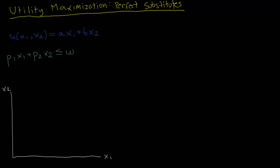In this video, I'll be going over the utility maximization problem for perfect substitutes. The utility function is defined over two goods, good one and good two, and it's linear in both goods, where A and B are just some constant parameters. We also have a budget constraint, which states that total expenditure on both goods must be less than or equal to a consumer's wealth or income level. The goal of utility maximization is to maximize the utility function by choosing a bundle of good one and good two subject to the budget constraint.